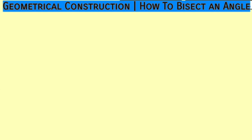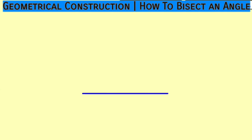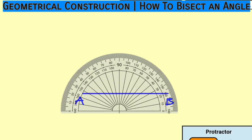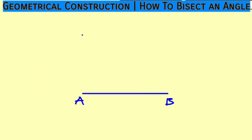To construct angle 90 degrees we are going to use a ruler and a protractor. Here's my ruler — I will draw a straight line. Next, let me label it as point A and point B. We are going to bring our protractor and place the origin at either B or A, so let me construct the angle at point A. We are going to use a pencil to place a dot on top of 90 degrees, then remove the protractor and use the ruler to connect the two points — the dot and point A.